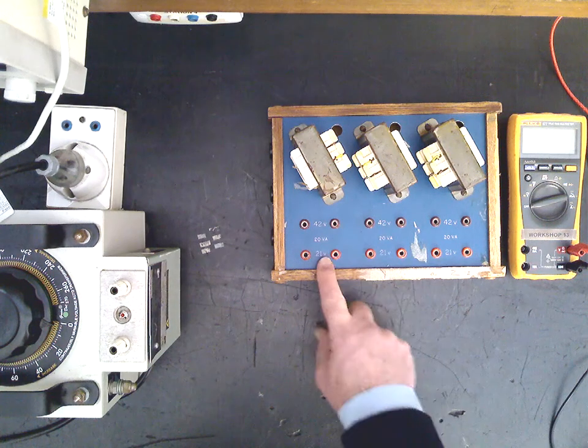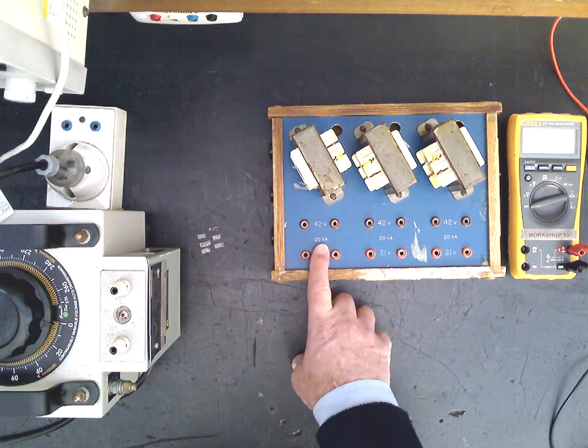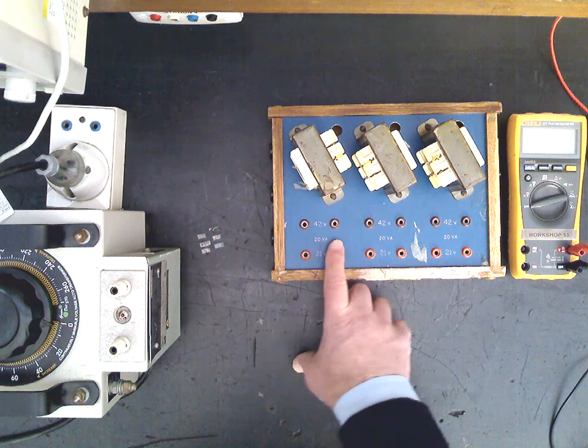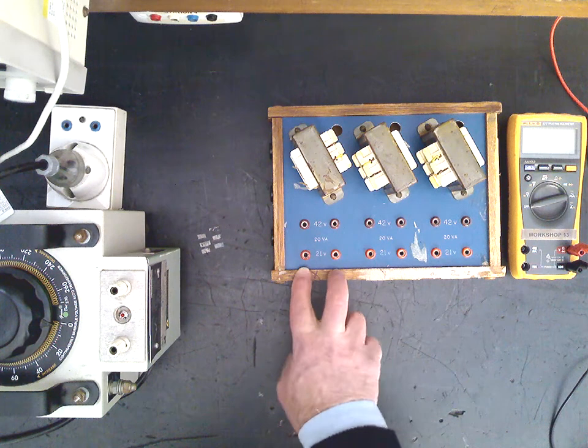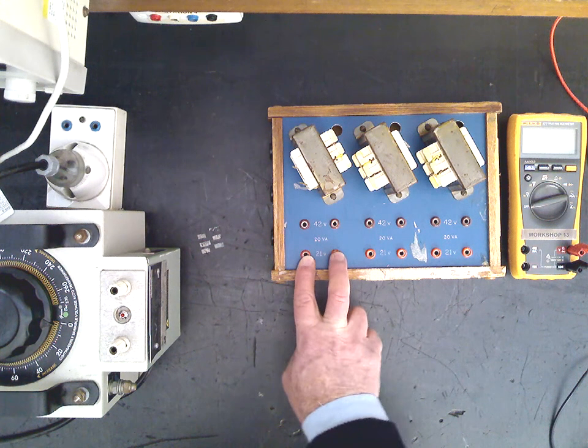It's a 42 volt to 21 volt, 20 volt ampere transformer. So I equals S over V, so maximum full load current out of that transformer on the secondary side would be around about 1 ampere.